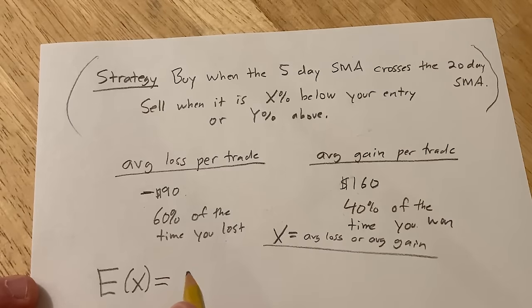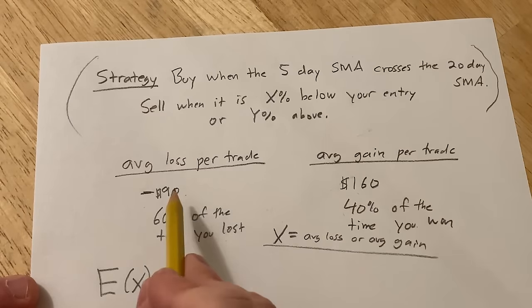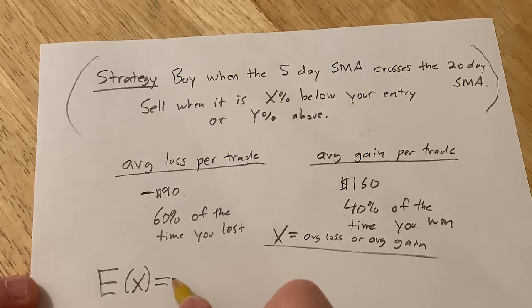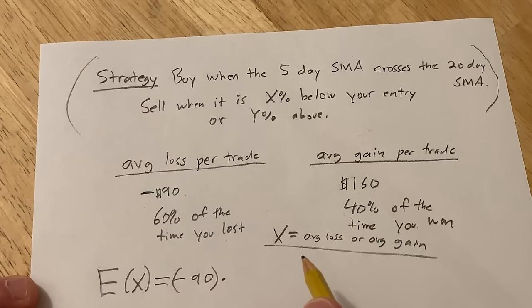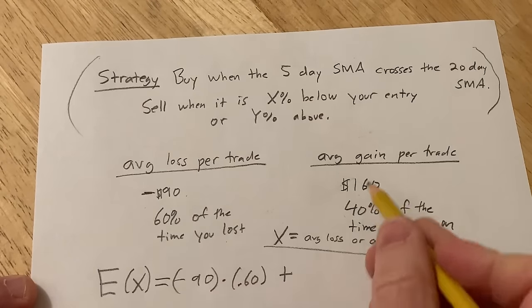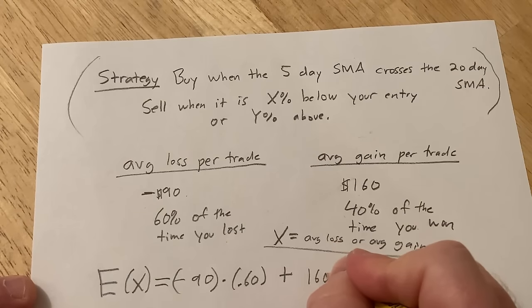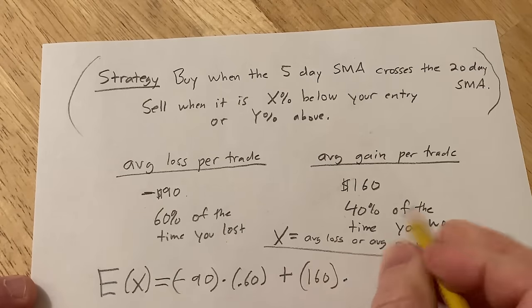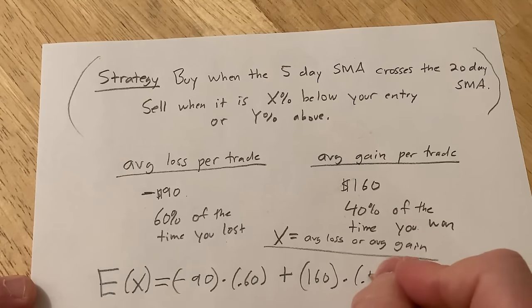So to compute the expected value of X, it's basically your average loss per trade—so negative 90 times the probability that you lost, which in this case we say is 60%, so 0.60—plus your average gain per trade, so 160 times the probability that you win, so 0.4.